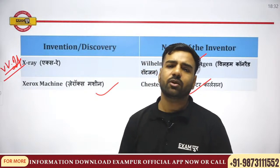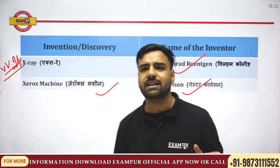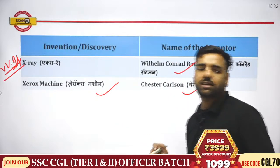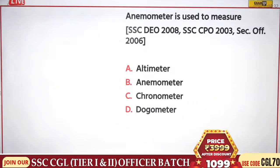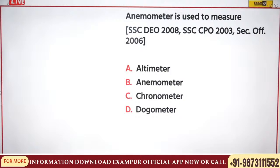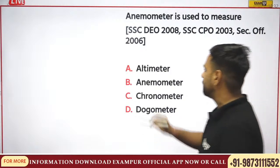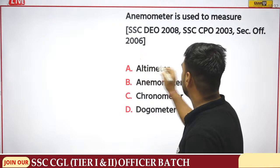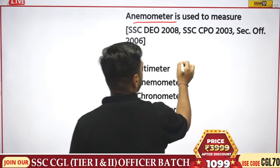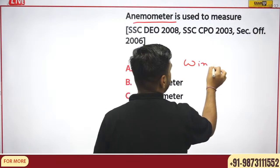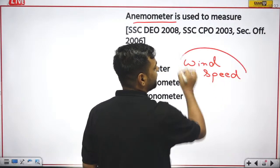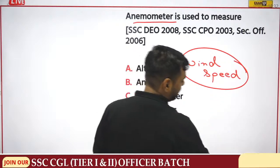Now we go with previous year question-answer sessions. First question: anemometer is used to measure what? The correct answer is wind speed — please remember that anemometer is used for measuring wind speed.